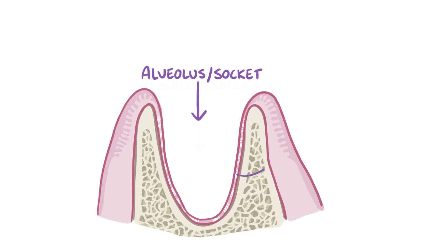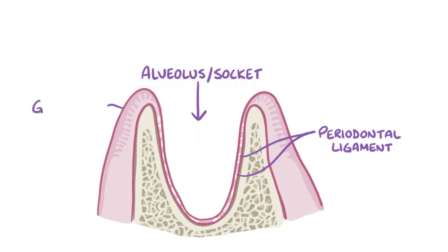The socket is lined on the inside by a periodontal ligament. Protecting the alveolus on the outside is a layer of soft, supportive tissue called the gingiva, or gums, that sits on the top of the bone.